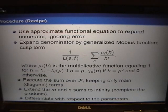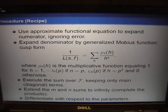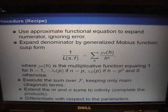Here's the ratios procedure in five steps. First, we use the approximate functional equation but ignore all the error terms, just using the first two pieces. Second, we expand the denominator using the generalized Mobius function.